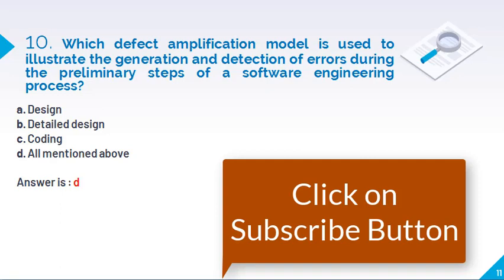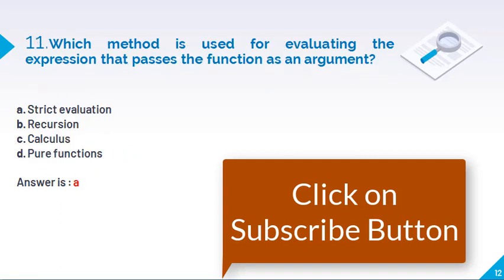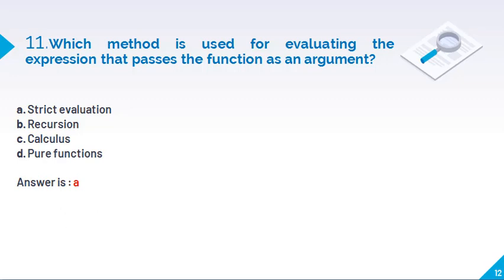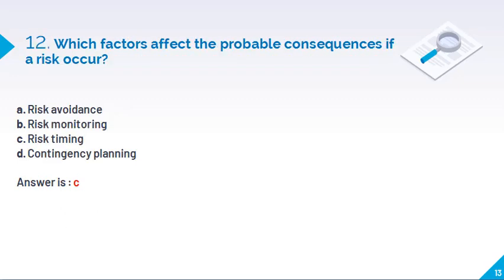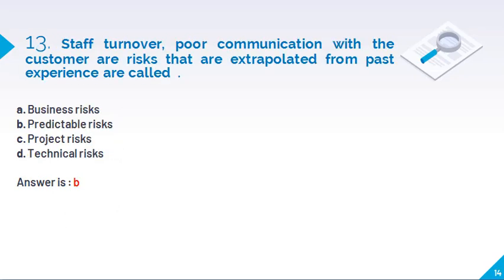Question 10: Which defect amplification model is used to illustrate the simulation and detection of error during the preliminary step of software engineering process? So design, literal design and coding. So we can easily get the error from our process. Which method is used for evaluating the expression that passes the function as an argument? So strict evaluation. Which factor affects the probable consequences if a risk occurs? So in last video I have explained the different risk management or the type of risk. So you can refer that video. So you can easily understand this question and easily you can give answer to this kind of question.